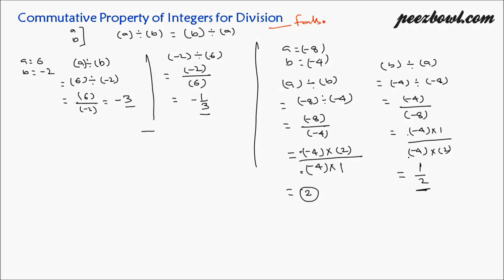You can try putting more values in place of A and B to check whether A divided by B equals B divided by A. In all cases you will find that this property does not hold for integers under division. In my next videos I will explain some more properties of integers for division. Thank you for watching.